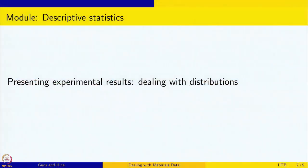Welcome to this course on dealing with materials data. We are going to look at the collection, analysis and interpretation of materials data. We have already done one module on introduction to R and we are learning now how to use R to do descriptive statistics. In this we are going to look at how to present experimental results, and we have already seen how to present experimental results taking the conductivity of ETP copper as an example.